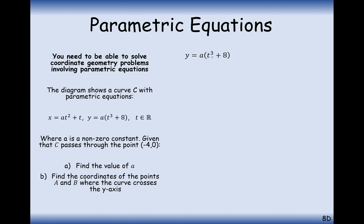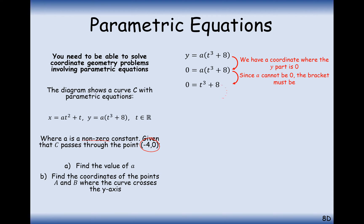We set the y part of this coordinate equal to zero because it's where the curve intersects the x axis. We divide through by 'a' — we know 'a' is non-zero so that's legitimate. Then subtract 8 to the other side and take the cube root. Remember you can cube root negative numbers. So in this case t is minus 2.